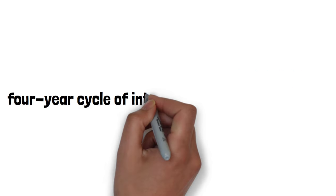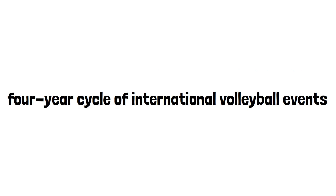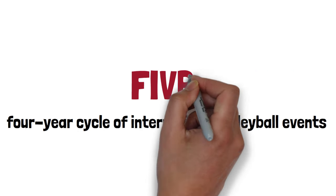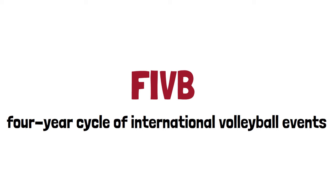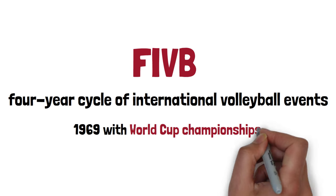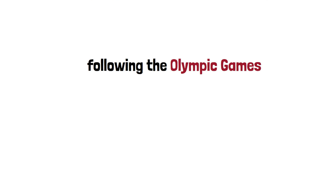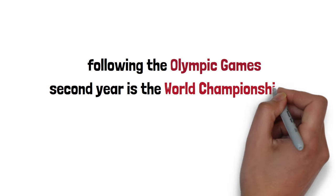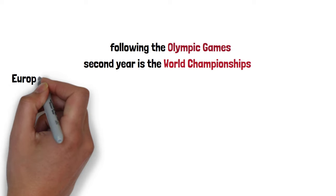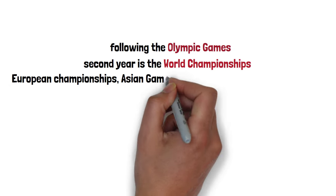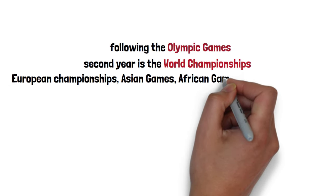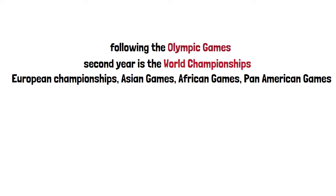A four-year cycle of international volleyball events, recommended by the FIVB, began in 1969 with World Cup championships to be held in the year following the Olympic Games. The second year is the World Championships; in the third, regional events are held — for example, European championships, Asian games, African games, Pan-American games — and in the fourth year, the Olympic Games.